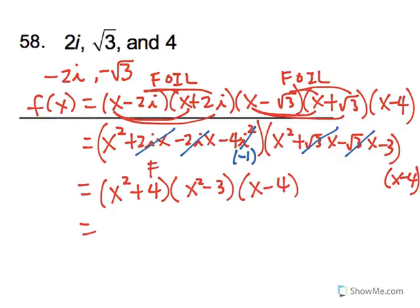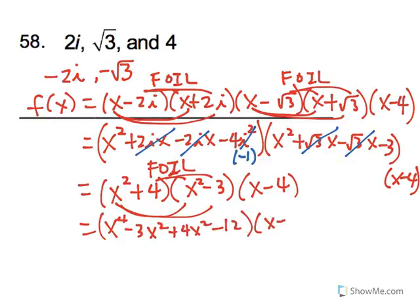Next, we're going to foil again the first two terms because we have two factors multiplying. And foiling it, we have x to the 4th minus 3x squared, inner term plus 4x squared, and last term minus 12. And let's bring down the x minus 4.